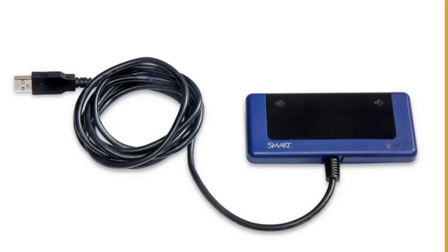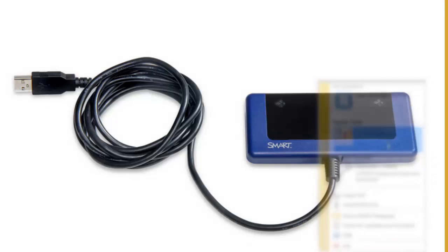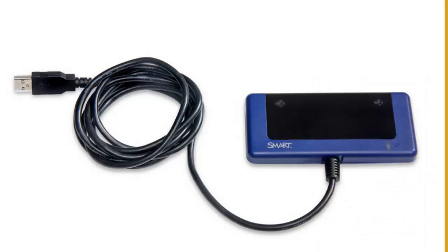To activate the software, plug in the receiver as a license is held on the receiver itself. Click on the response icon in your system tray and then choose activate. The software will then find the license code and copy it into the box for you. Make a record of the license code, type your email into the license code box, and choose next. Response will then activate itself.